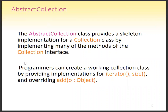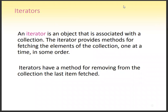The sub-part of the collection is the AbstractCollection class, which provides skeleton implementations for the collection class by implementing many of the methods of the collection interface. Programmers can create a working collection class by providing implementations for iterator, size, and by overriding the add method. These — iterator, size, and add — are the functions we can use whenever we are dealing with a collection container.